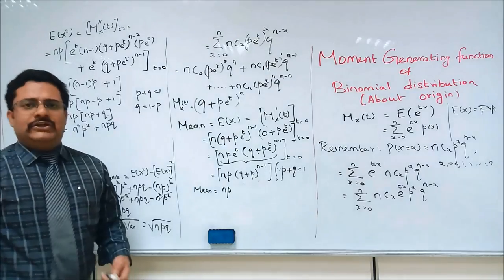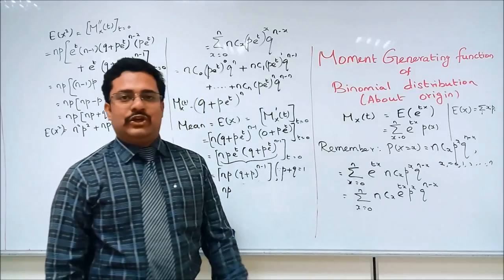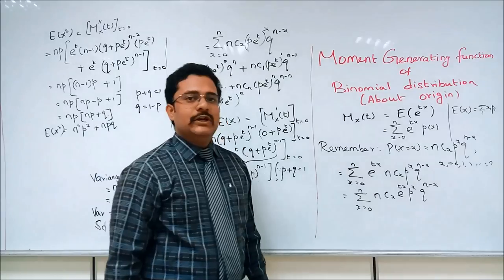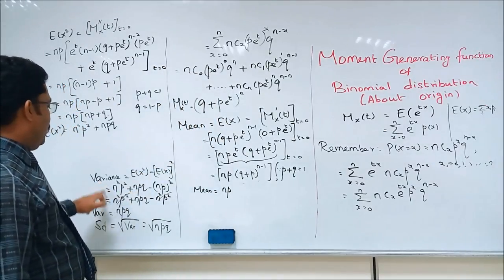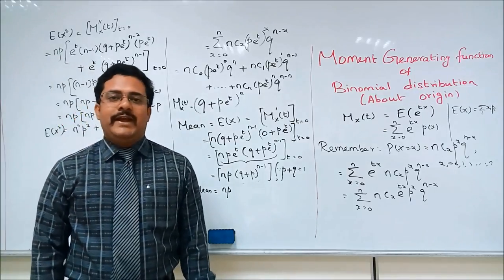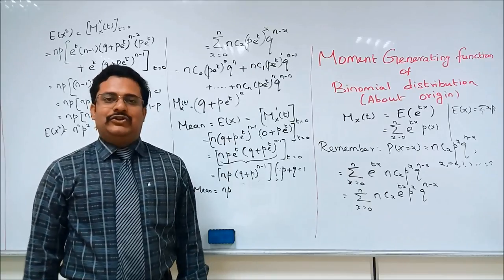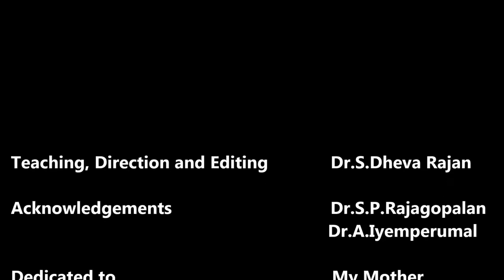In this lecture we discussed the Moment Generating Function of the binomial distribution, using the rule mx(t) = E[e^(tx)]. We then found the mean and the variance of the binomial distribution. Hope you enjoyed this lecture — we will be meeting soon in another lecture. See you and bye bye.